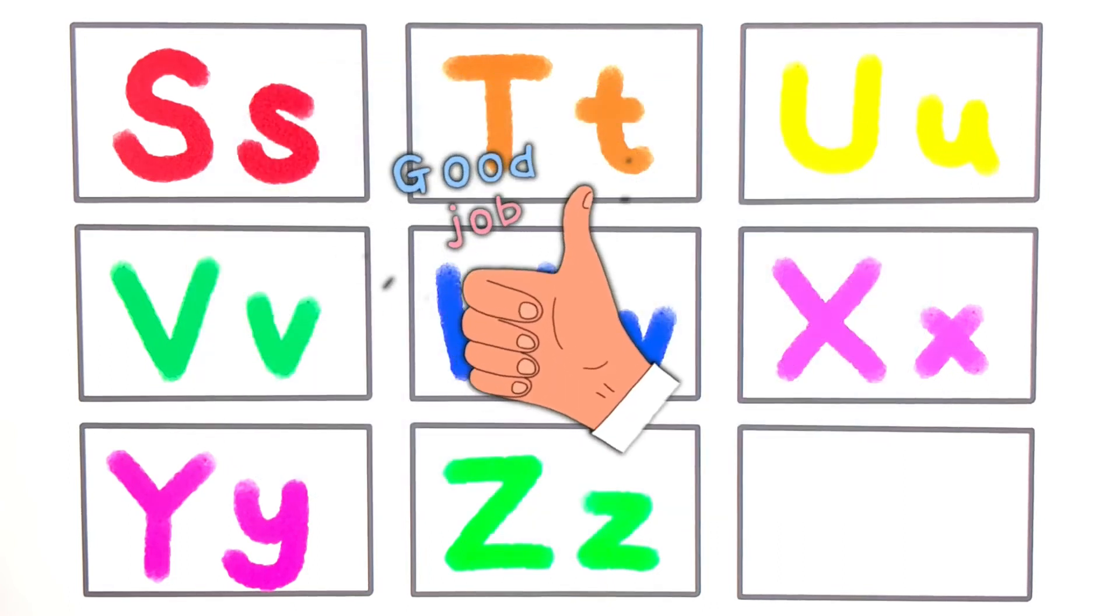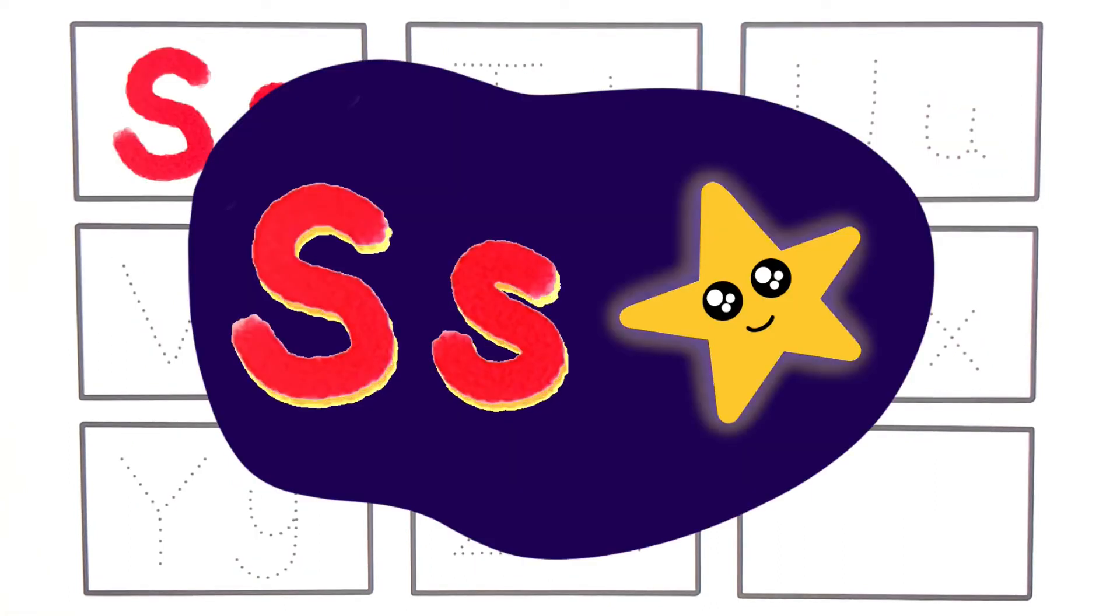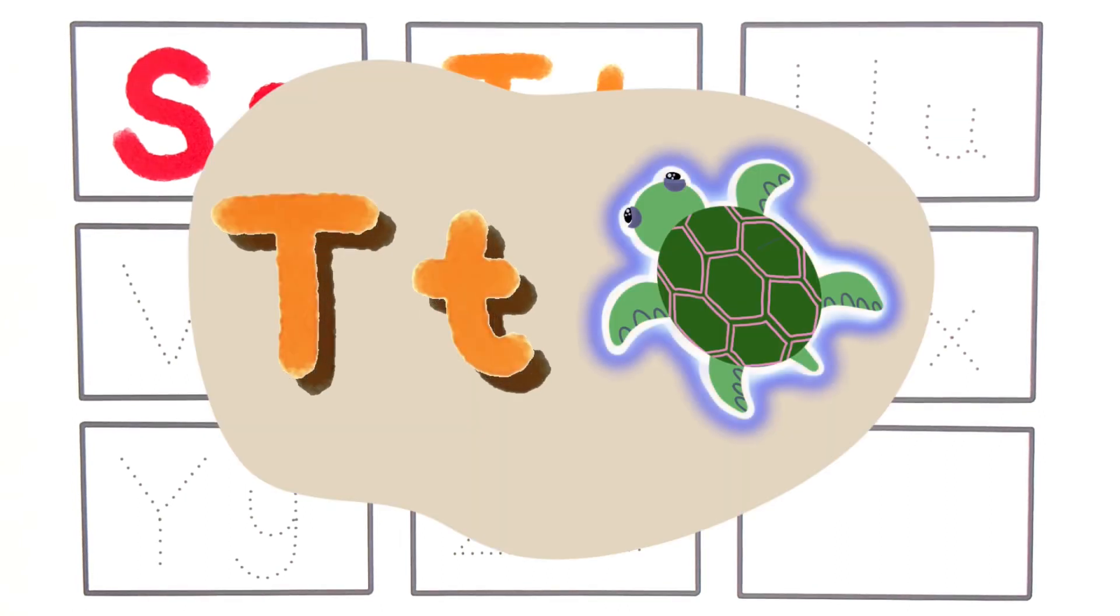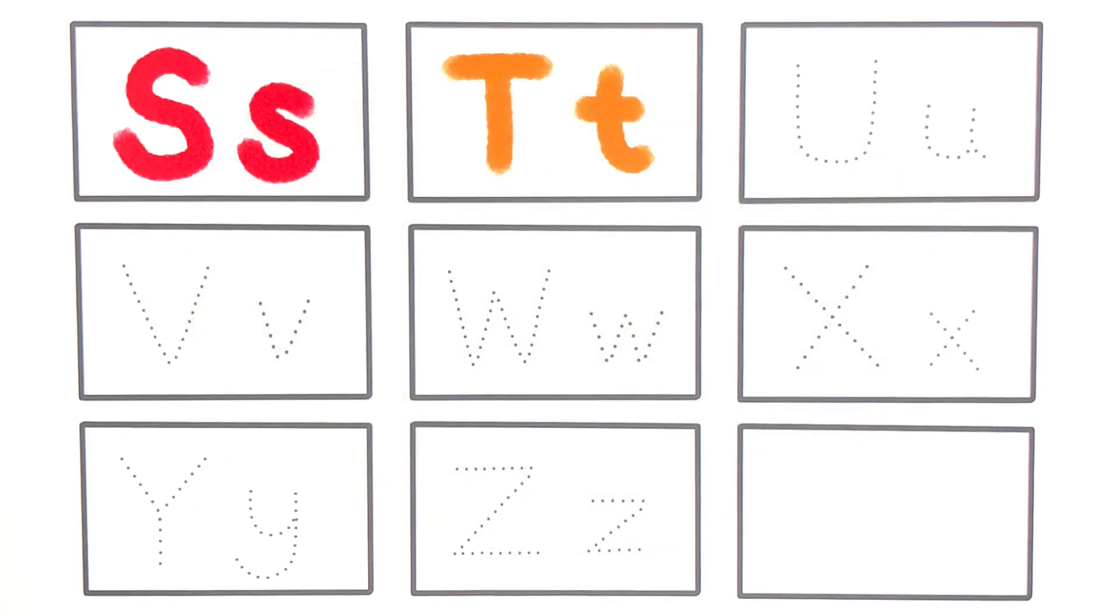W, X, Y, and Z. Now I know my ABCs. Next time won't you sing with me. T for turtle. U for umbrella.